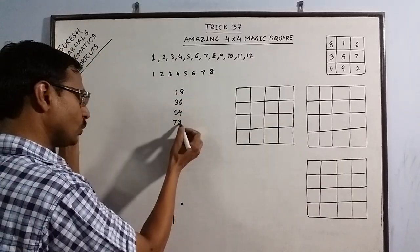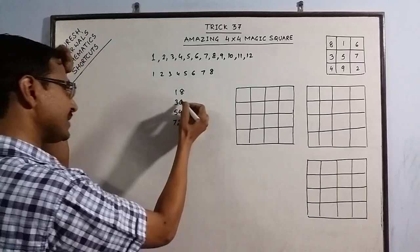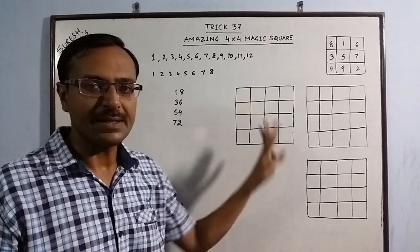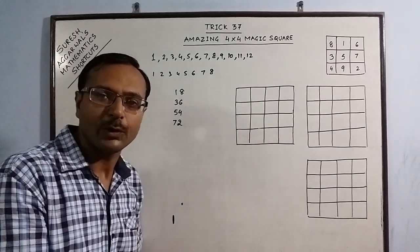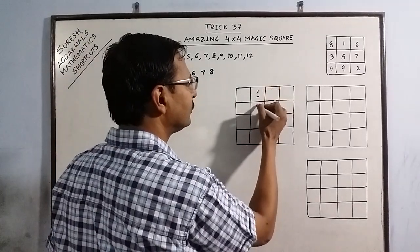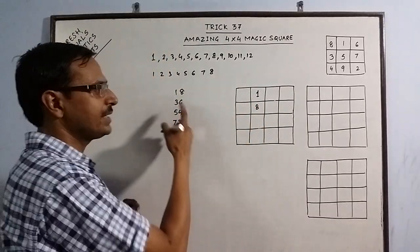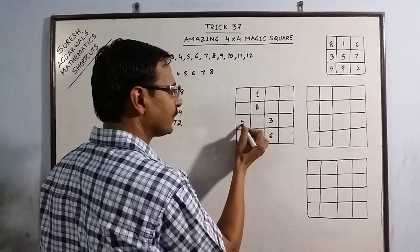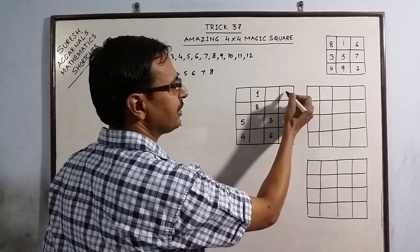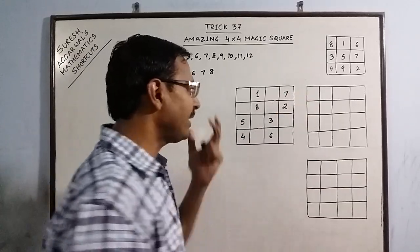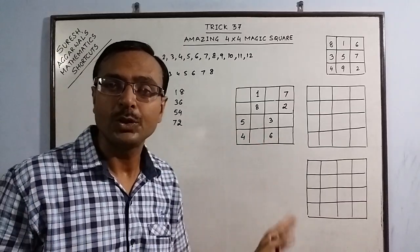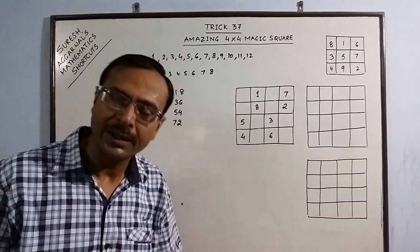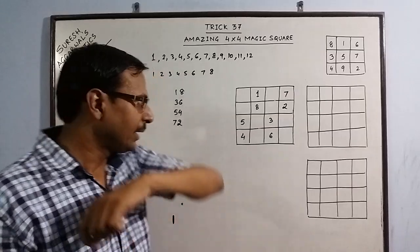See, 1, 2, 3, 4, 5, 6, 7 and 8. So, I am going to write these 8 in these cells. There is a particular method for that. So, I will write 18 here. This is 18, now 36, 36, now 54 and finally 72. So, I have filled up 8 cells out of 16 using the digits 1 to 8 which are involved in first 4 multiples of 18.